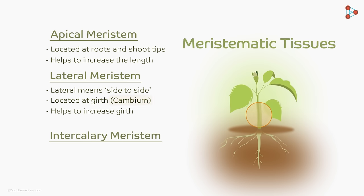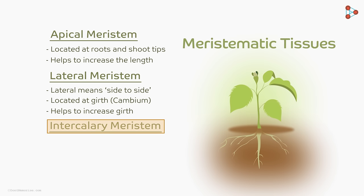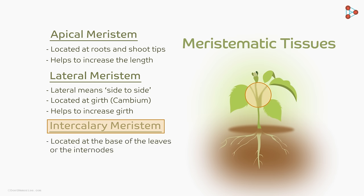The third tissue type is the intercalary meristem. This tissue is found at the base of the leaves or the internodes — the spaces between the nodes. This tissue facilitates the growth of the twigs into branches.